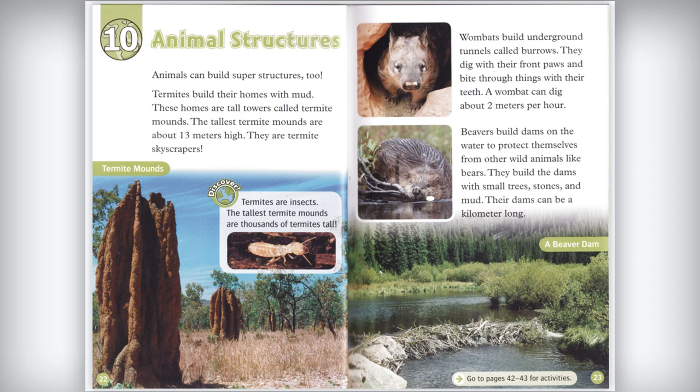Wombats build underground tunnels called burrows. They dig with their front paws and bite through things with their teeth. A wombat can dig about 2 meters per hour. Beavers build dams on the water to protect themselves from wild animals like bears. They build the dams with small trees, stones, and mud. Their dams can be a kilometer long.